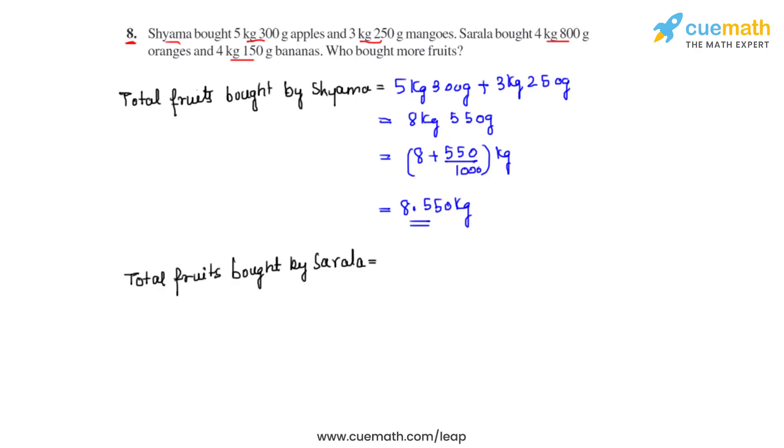Now we'll find the total fruits bought by Sarla. That can be written as 4kg 800 grams of oranges plus 4kg 150 grams of bananas.